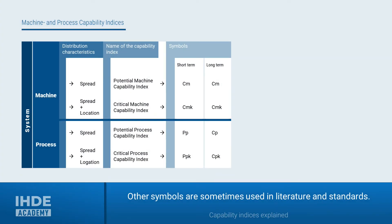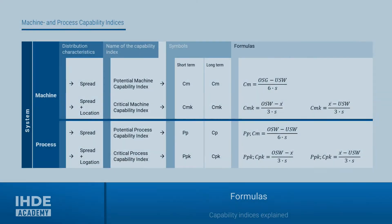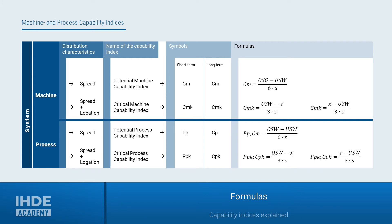Different formula symbols are used depending on what is being examined and when the examination takes place. You should remember that C stands for capability, M for machine, and P for process. The small k has its origins in a Japanese word which translates roughly as offset or bias, so it stands for an offset or shift of the process location. These different formulas only differ for machine and process in naming, but not in calculation. When calculating the critical capability indices, you have to look at whether the process location is closer to the upper or lower specification limit — on the side where the process location is closer to the limit, there is also the more relevant capability index.